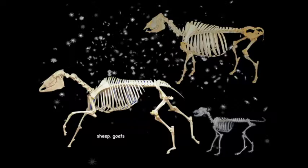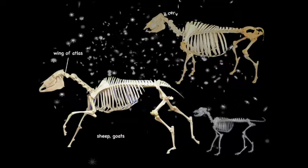Looking at the vertebral formula, note that the wing of the atlas is easily palpable — that's a good landmark. We have, in almost all mammals, seven cervical vertebrae, even in a giraffe.